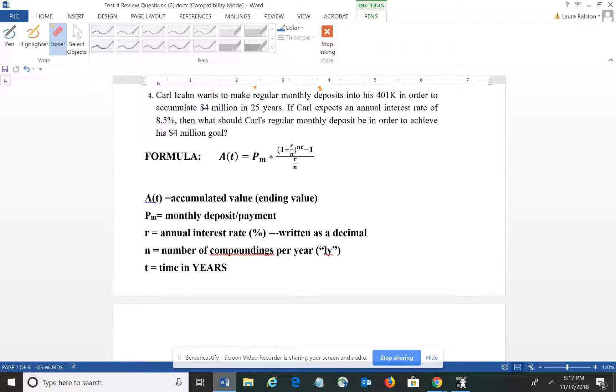Then what should Carl's regularly monthly deposit be in order to achieve his $4 million goal? Now this one does require a formula. The formulas are not provided on the test, so I would definitely tell you to write this down. The A(t) represents your accumulated or ending value. P represents your monthly deposit or payment. R is your annual interest rate, n is the number of compoundings, and t is the time in years.